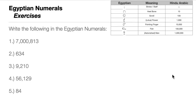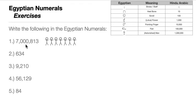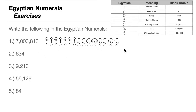For number one, 7,800,813: write the man seven times (7,000,000); skip the thousands period entirely; write eight scrolls (800); write one heel bone (10); and write three strokes (3). That's how we write 7,800,813 in Egyptian numerals.